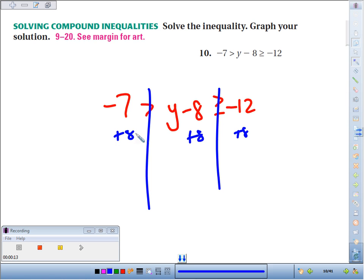We'll add 8 to both sides. And when we do that, negative 7 plus 8 is 1, is greater than y, is greater than or equal to negative 12 plus 8 is negative 4.